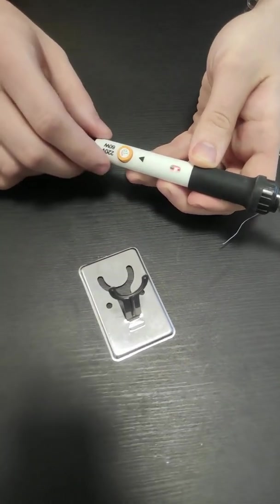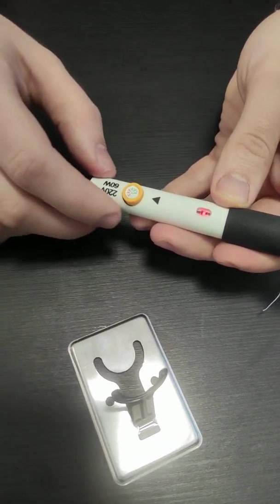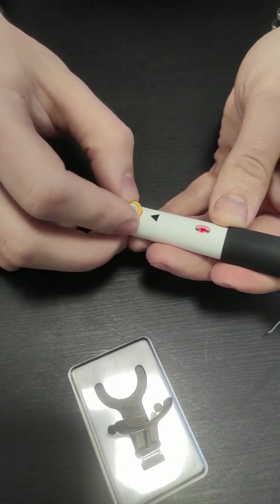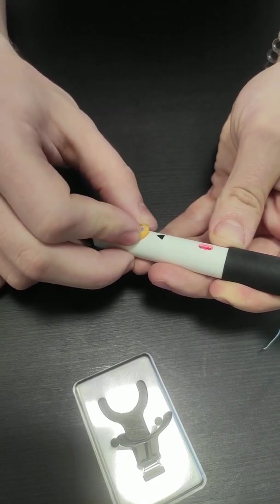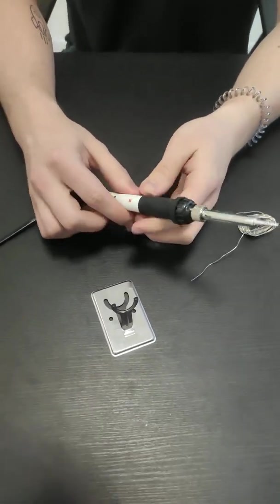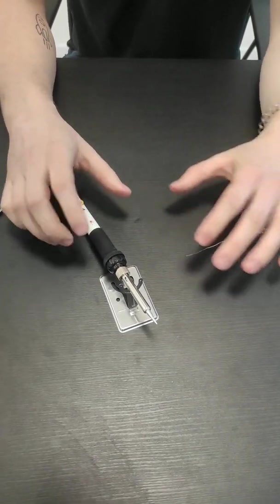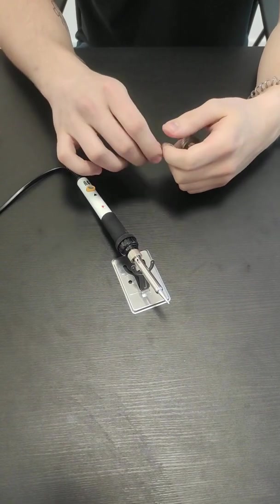Then we need to set the right temperature of the soldering iron. Here the text is quite tiny, but you want to set it to 350 degrees Celsius. This is the temperature that we want. After that, you will have to leave your soldering iron like this to heat up a bit.